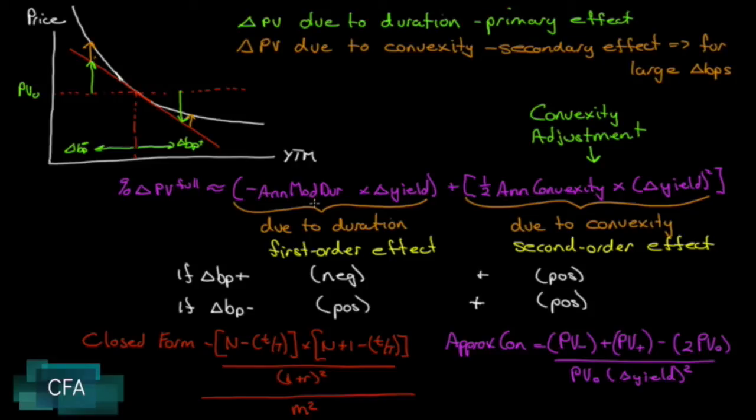Remember, modified duration gives us a measure of the percentage change in the price of a bond assuming a straight line relationship between price and yield. That's what that will give us, and then of course times the change in yield.